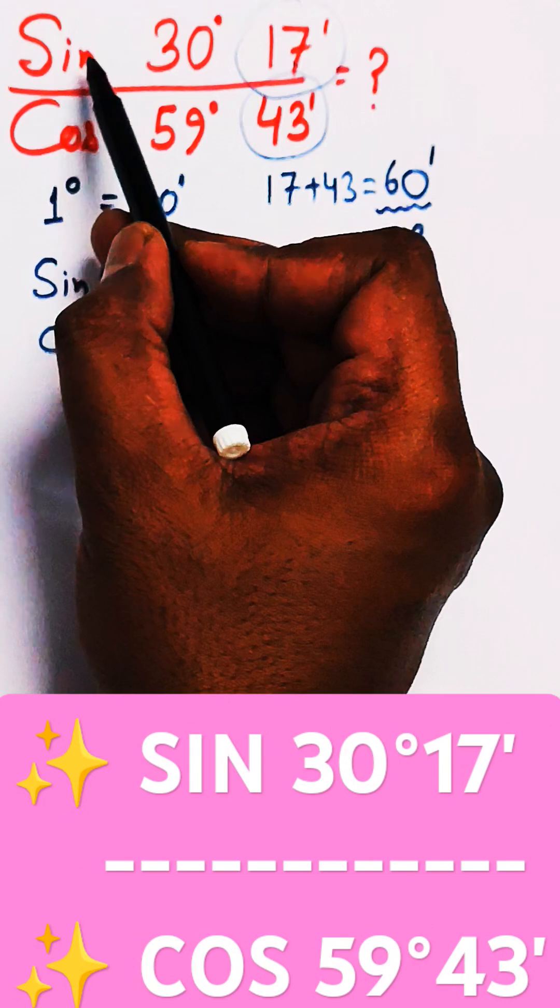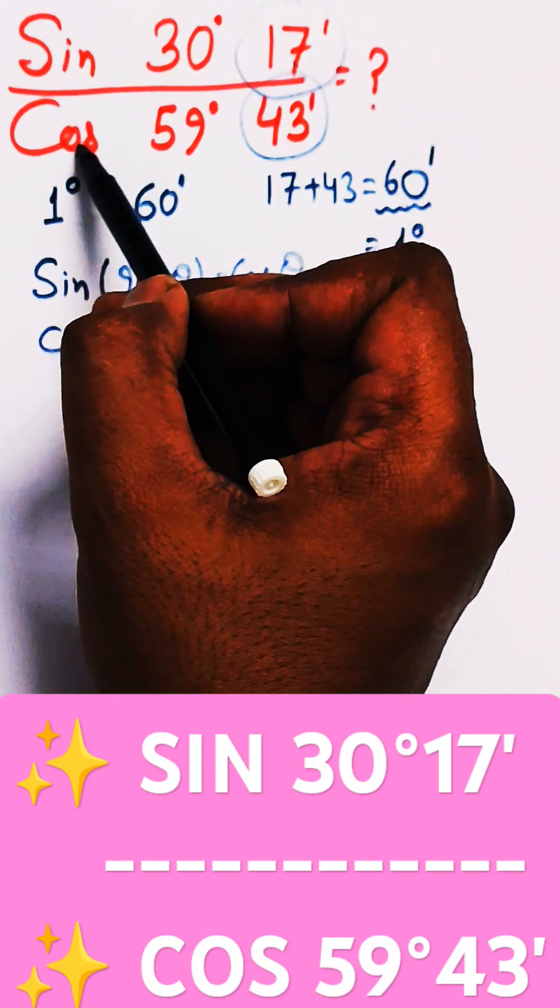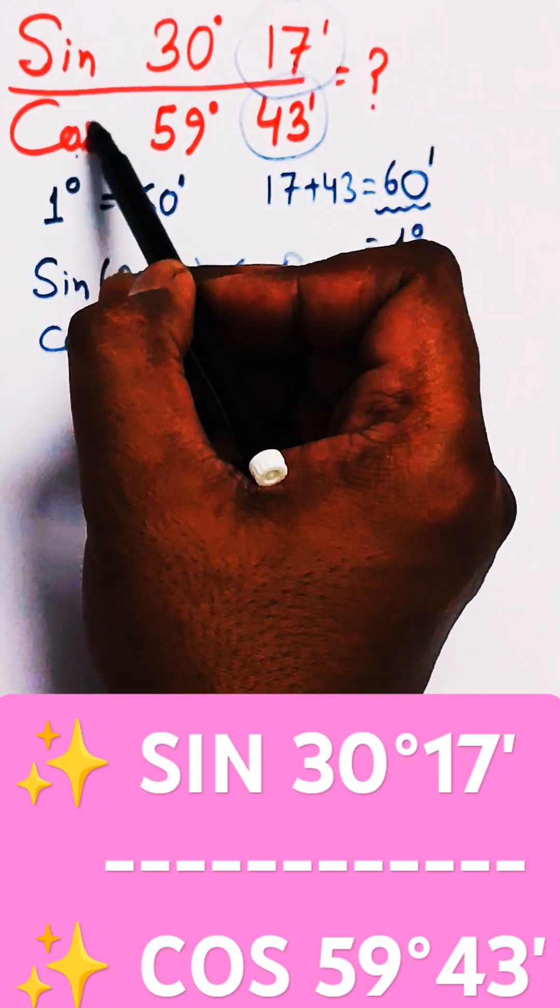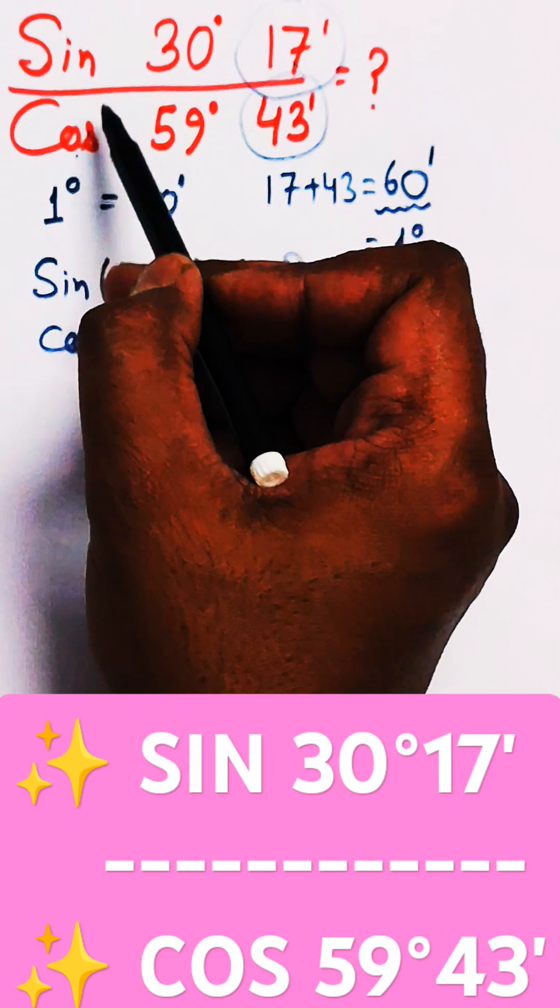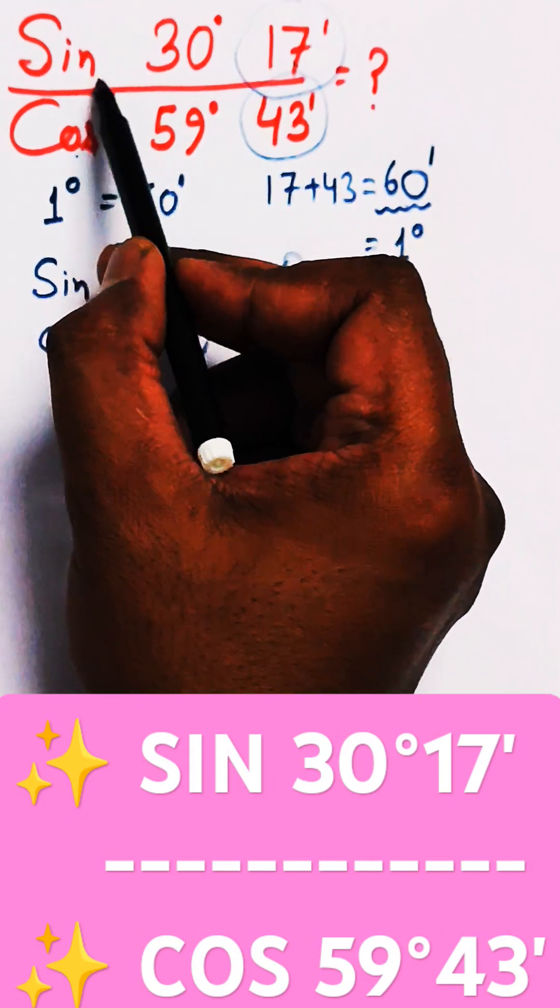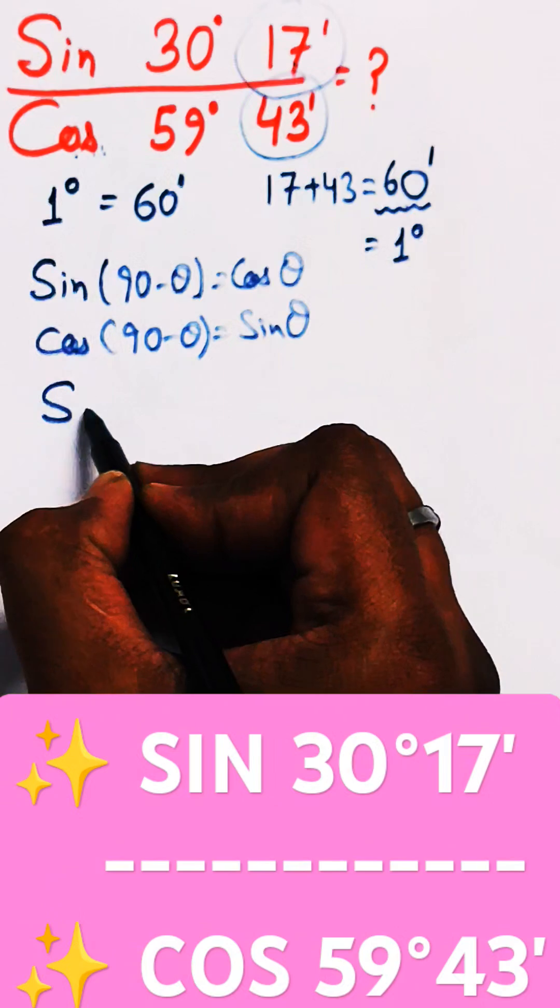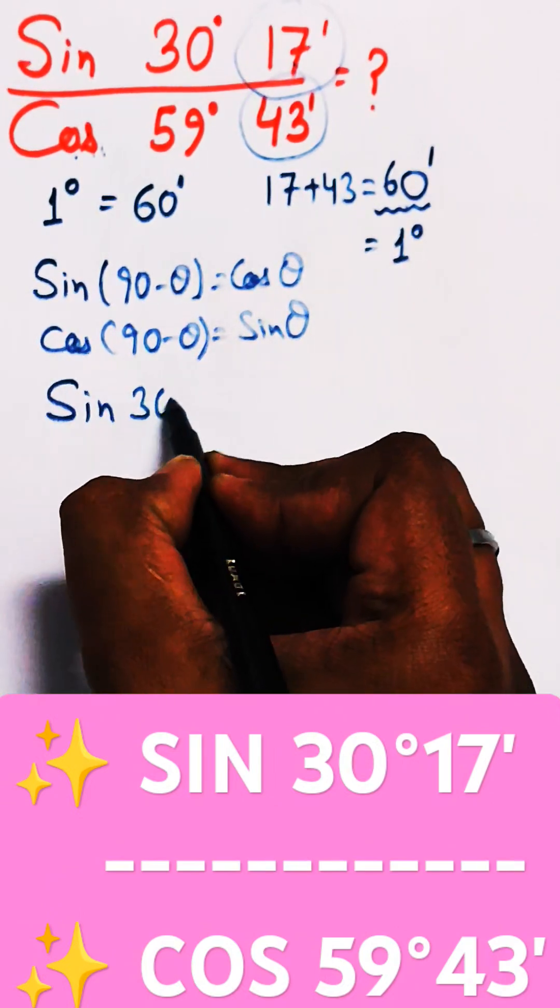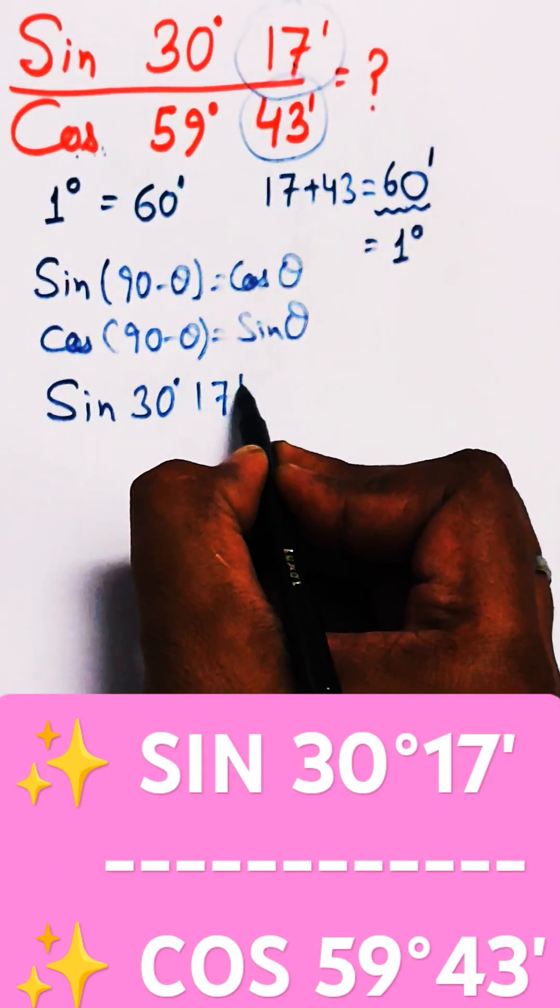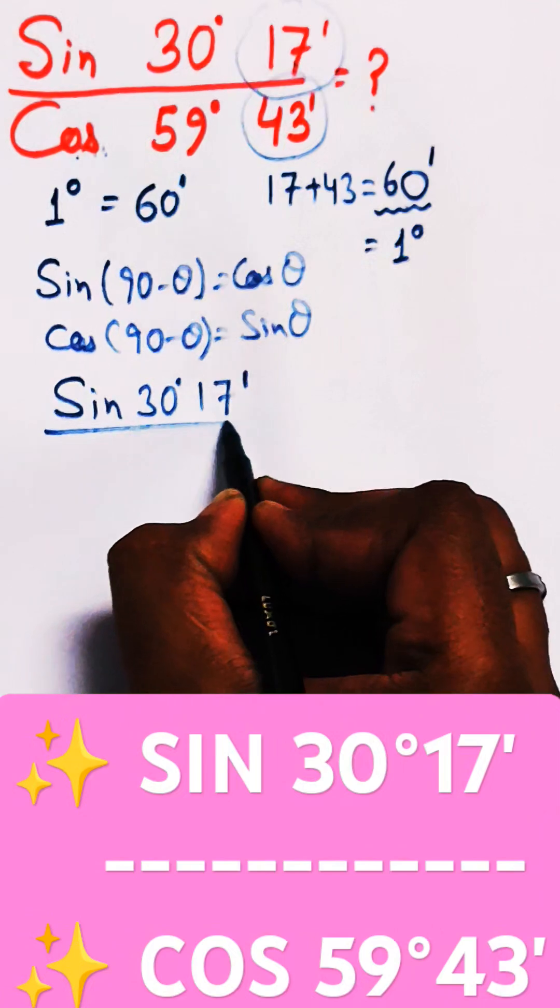To convert the sin into cos or the cos into sin, so that only one term will be visible—either sin in numerator and denominator, or cos in both. Let us leave the numerator as it is: sin 30°17'. And for the denominator...